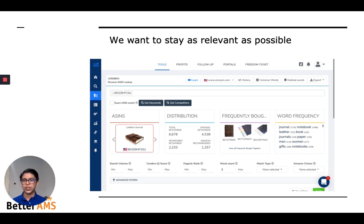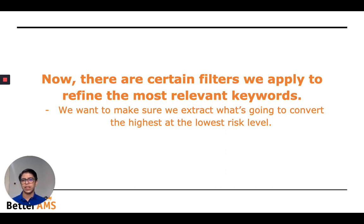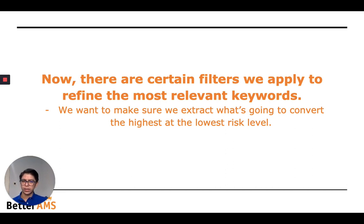We're going to apply certain filters here. Follow me closely over the next few steps. We want to make sure we extract what's going to convert the highest at the lowest risk level, because the higher risk level you go, the higher your chances of getting a high ACOS and not being profitable on your advertising campaign. So we want to make sure we avoid and mitigate risk by choosing the best keywords. It's just like selecting the best product — if you select a good product it's going to sell well organically. But if you pick the wrong product initially, you're going to have a bad time trying to rank it. The same applies to keywords. We want to make sure we select the best possible keywords so that your campaigns perform the best possible way.